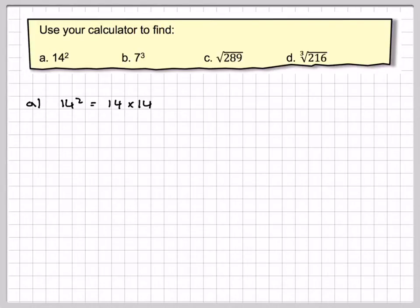Just recapping that, on our calculator we did 1, 4, x squared, equals, and then we get 196.